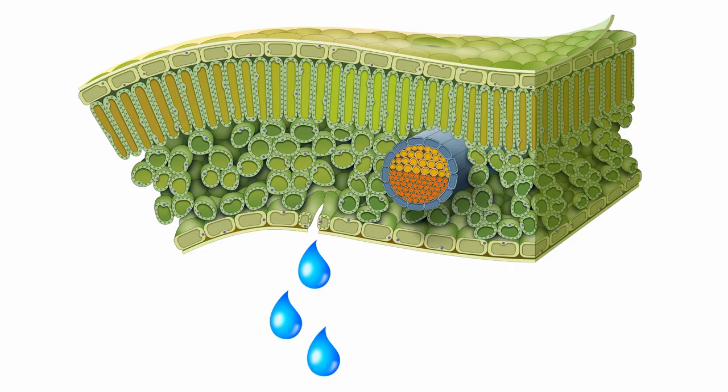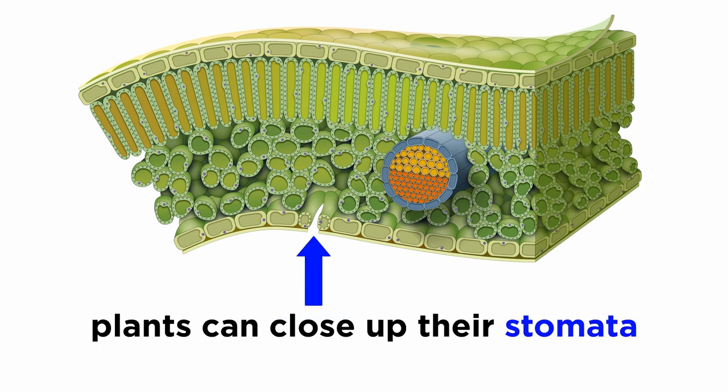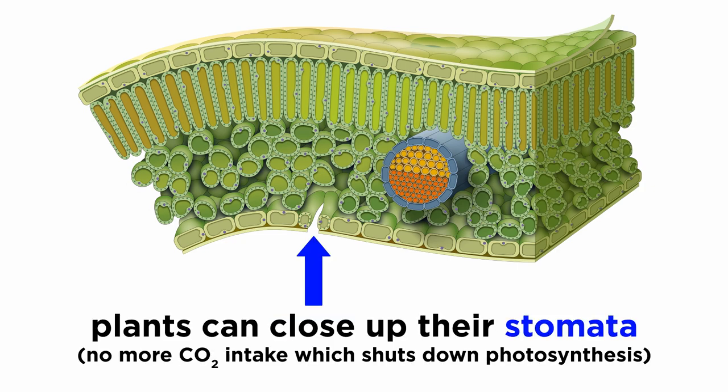If environmental conditions cause rapid water loss, plants can protect themselves by closing their stomata. However, after the stomata are closed, the plants no longer have access to carbon dioxide from the atmosphere, which shuts down the process of photosynthesis.